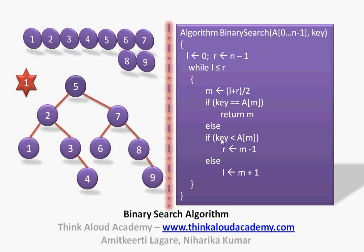We then check whether key 1 is less than A[M]. Yes, 1 is less than 5. So we set R = M-1. Since M was pointing to 5, the upper bound moves to M-1, which is element 4. The lower bound is still at 0. This means we search in the left half. We go into the while loop again and compute M = (L+R)/2, where L points to index 0 and R points to element 4. So M = (0+3)/2 = 1.5, taken as index 1, pointing to element 2.